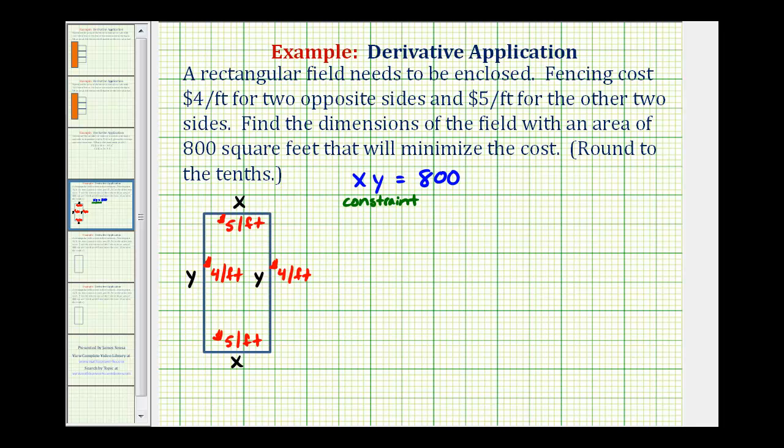Now let's write a cost equation. The total cost of the enclosure is going to be equal to the cost per foot times the number of feet. If we first consider the cost of these two sides, the cost of this fence is going to be x feet times $5 per foot, which would be 5x. The opposite side is going to cost the same, 5x.